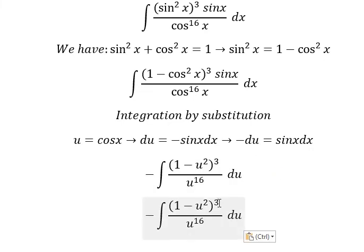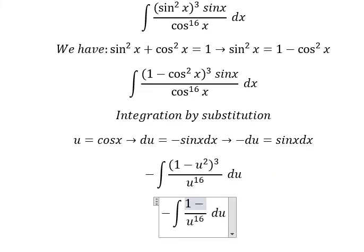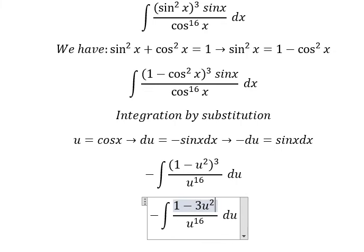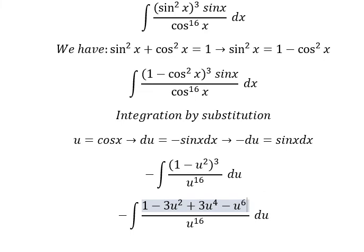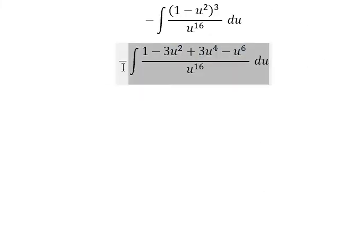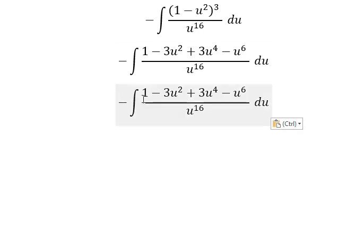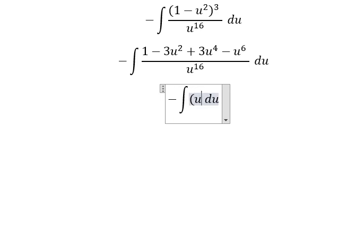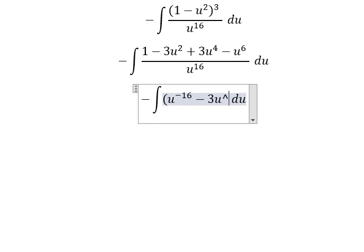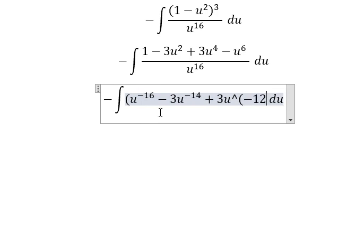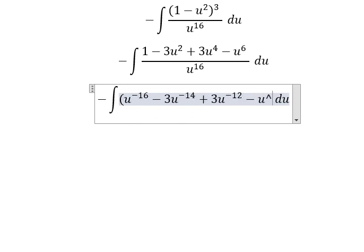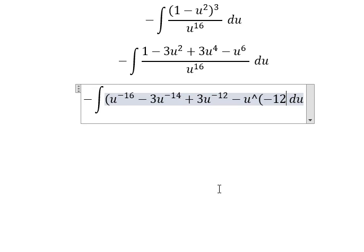Now we need to expand this. Number 1 divided by this one, this one divided by this one, and so on. So we have u to the power of negative 16, minus 3u to the power of negative 14, 3u to the power of negative 12, minus u to the power of — oh, I'm sorry — negative 10.